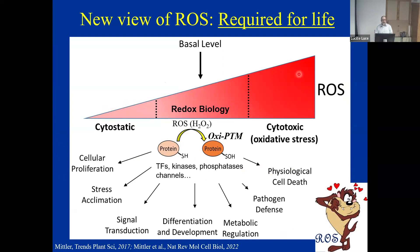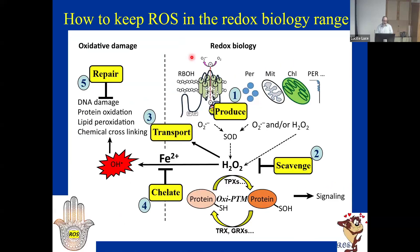If this is a depiction of the level of ROS in the cell: if the level goes too low, the cell will go into a cytostatic state and won't be able to do much. If it's too high, we go into a cytotoxic state—that's oxidative stress. But if you keep ROS at the redox biology range, then ROS, and especially hydrogen peroxide, are very important signal transduction molecules. They regulate protein structure and function by oxidative post-translational modification, and they regulate transcription factors, kinases, phosphatases, channels, and many other proteins, regulating a lot of important processes.